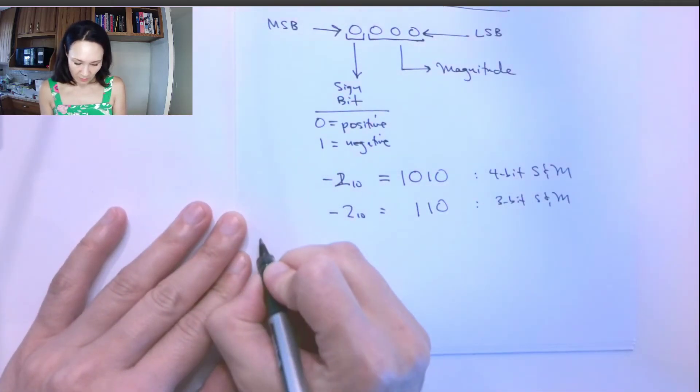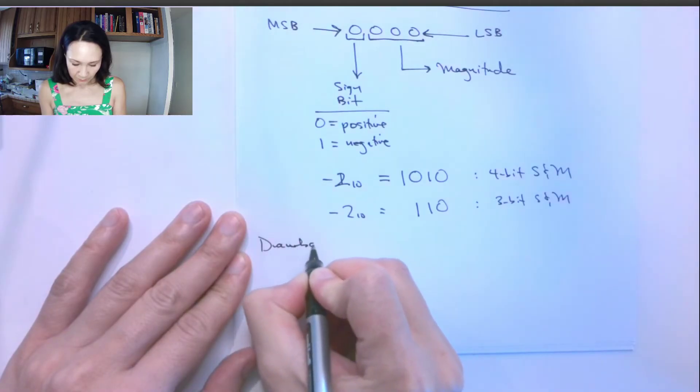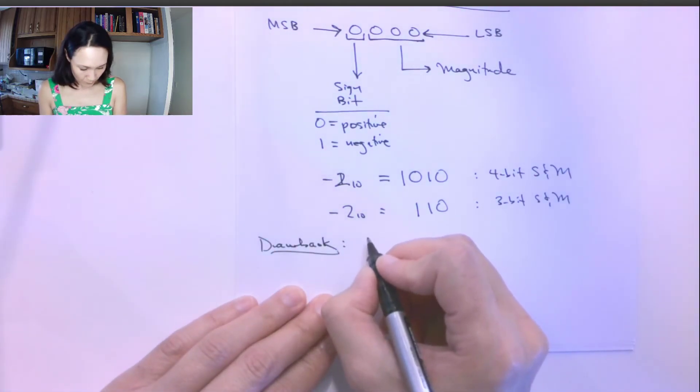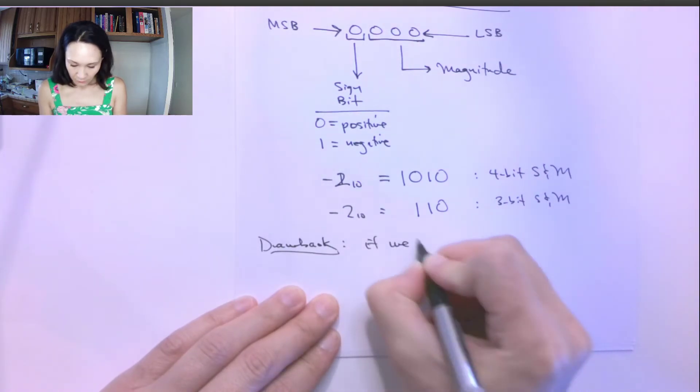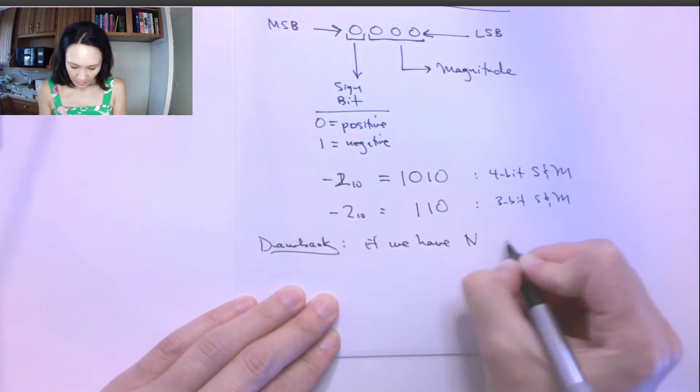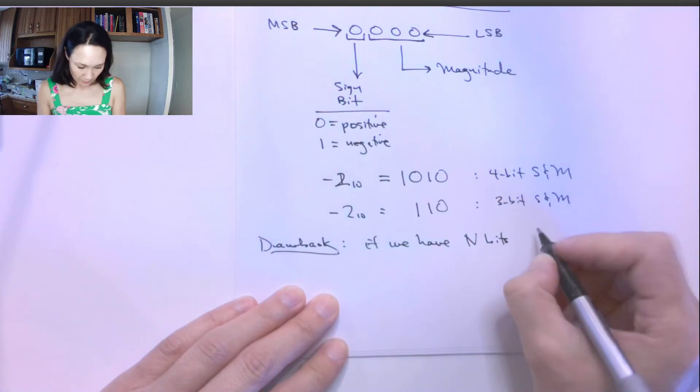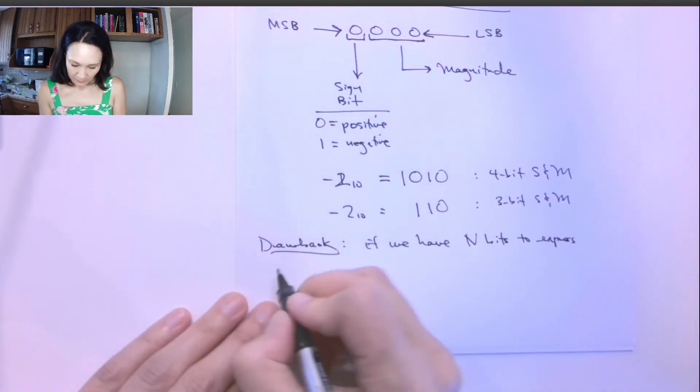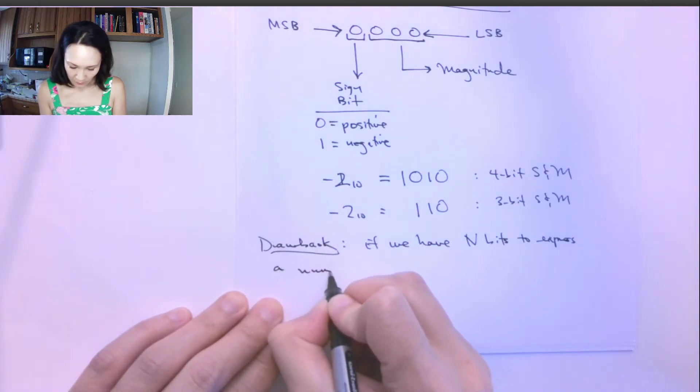So let me write that more formally. One drawback is if we have n bits to express a number in binary...